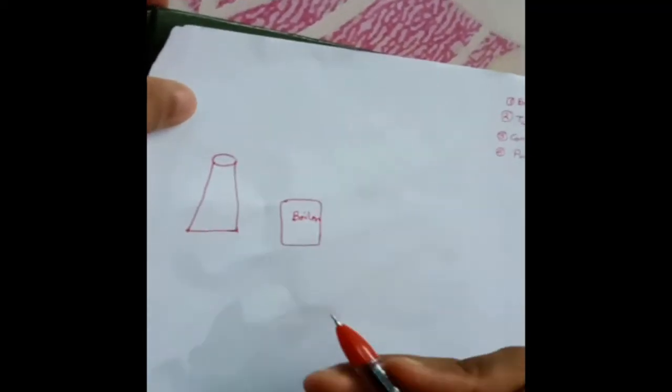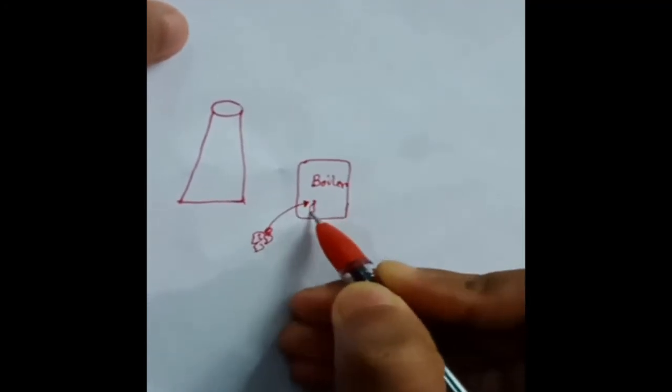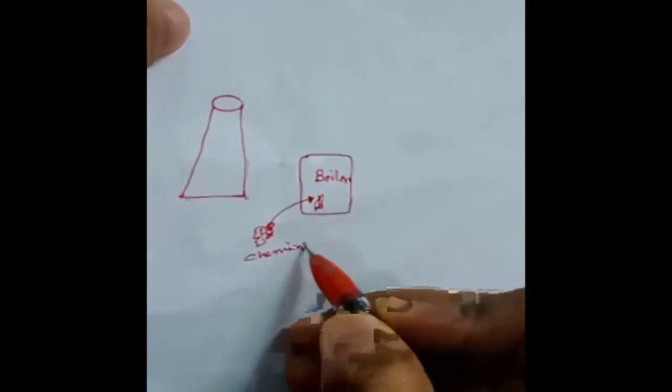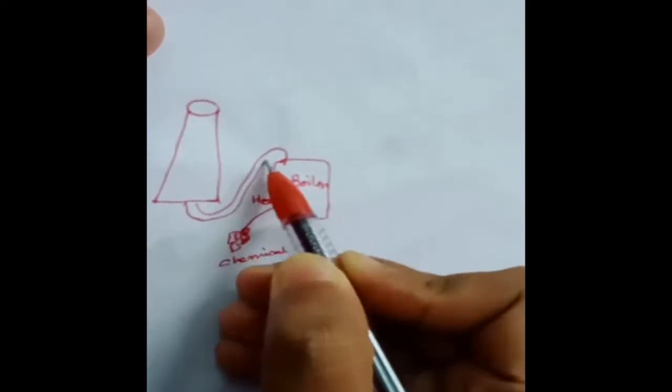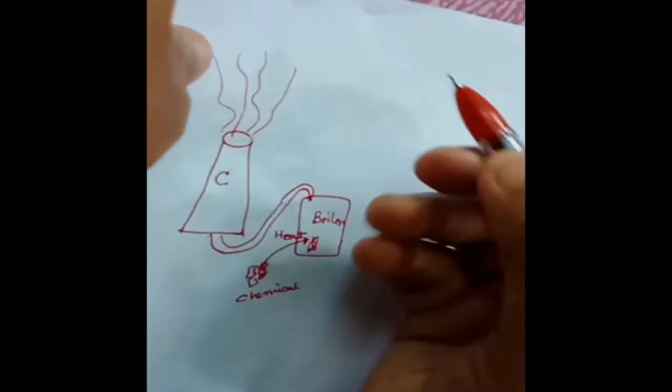The first device is the boiler. What happens in the boiler? There is coal — the coal is fired into the boiler, it catches fire, and the chemical energy of the coal is converted into heat energy. After burning, the flue gas is released to the atmosphere by means of a chimney.